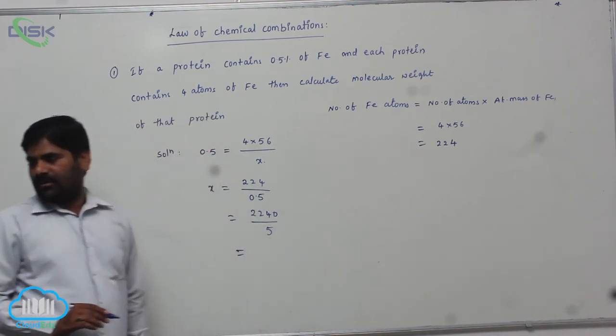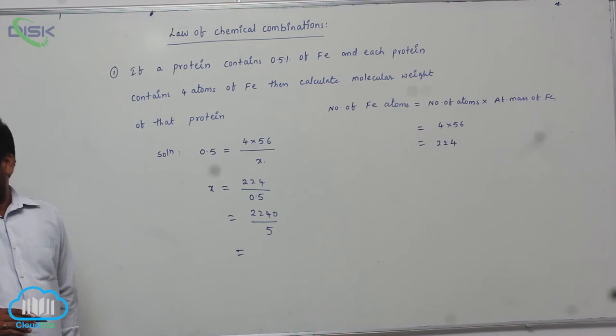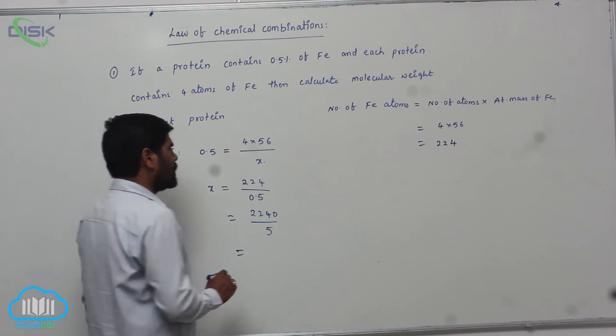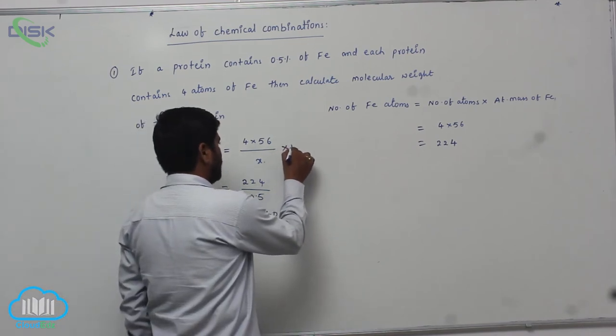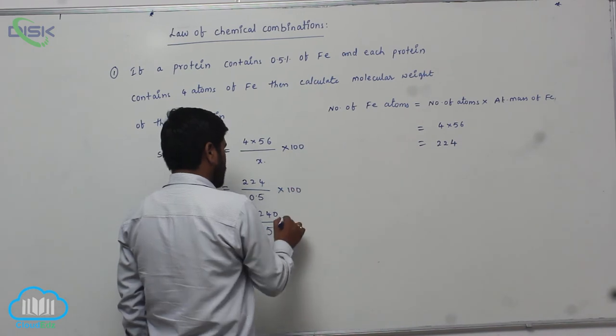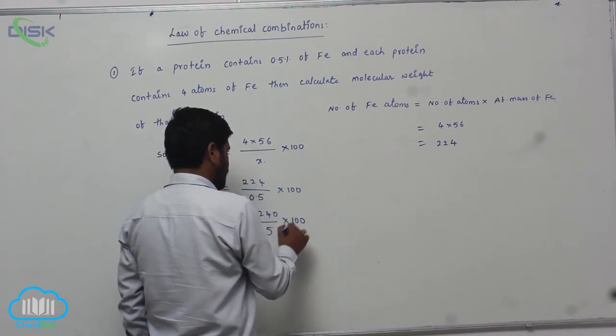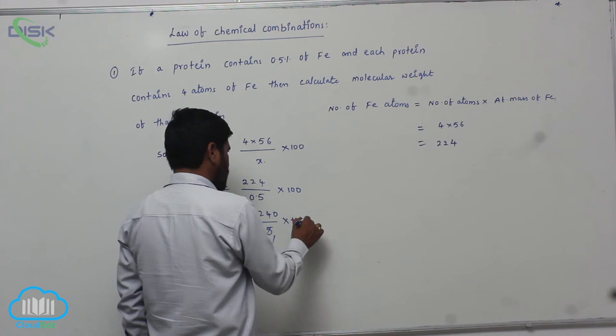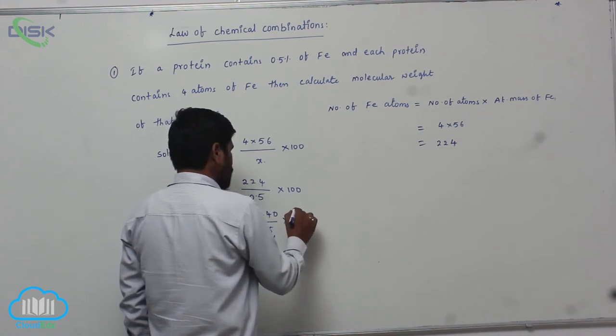Now it becomes 2240 by 5. Here is 100, here is also 100, then 100. So this is 1. Here is 24.